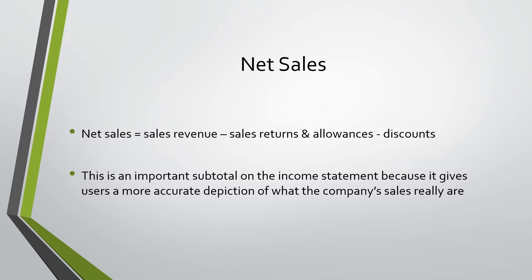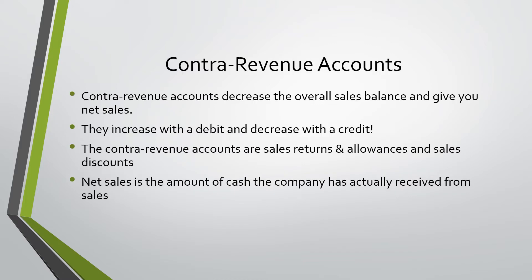This is the amount that they actually collect, not just the sales revenue they make. Contra revenue accounts decrease the overall sales balance and give you net sales. The contra revenue accounts are sales returns and allowances and discounts. Net sales is the amount of cash the company actually has received from sales.